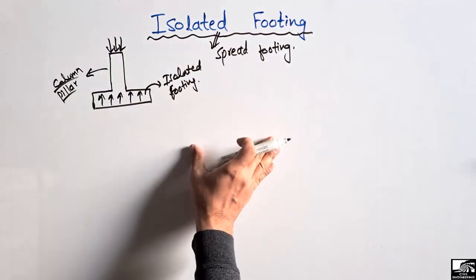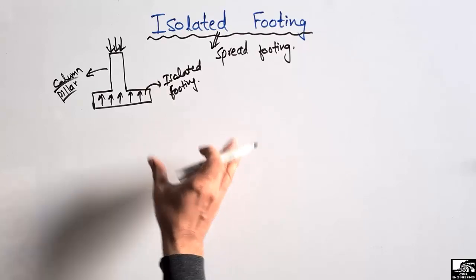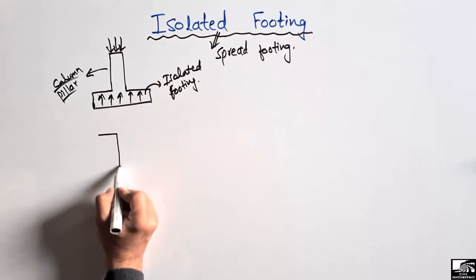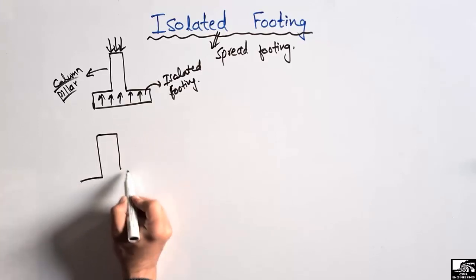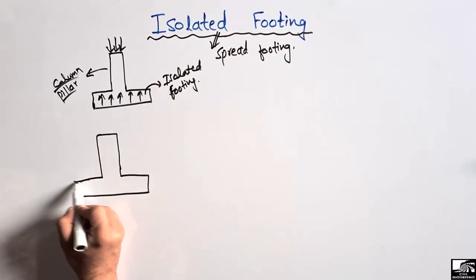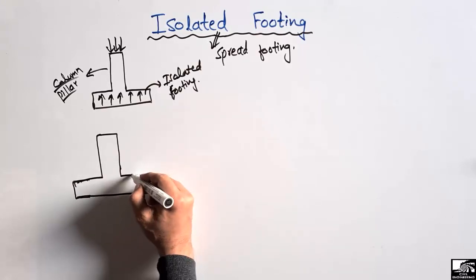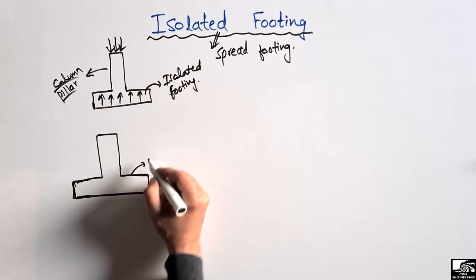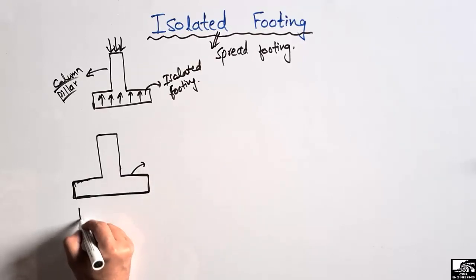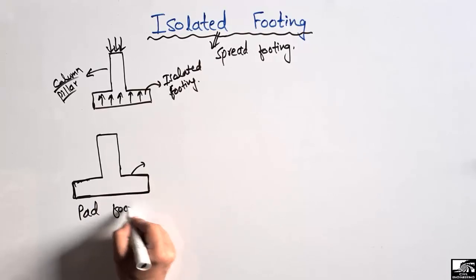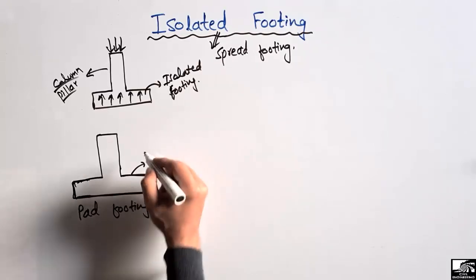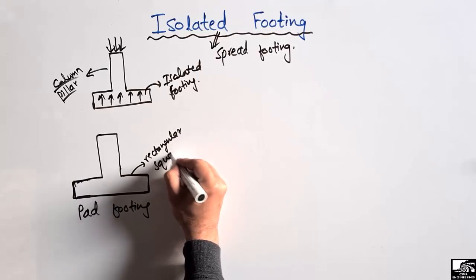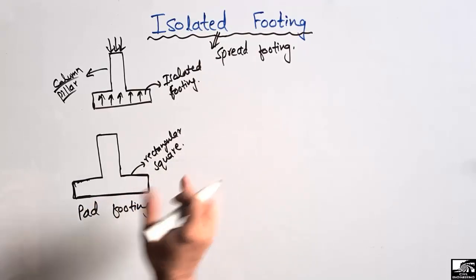There are three main types of isolated footing, and all types depend on the shape of the footing. The most simple type is the pad footing. In this case, the column load is taken by a footing that is rectangular or square in shape. Such type of footing is called the pad footing, and this is a type of the isolated footing.